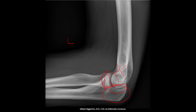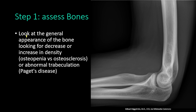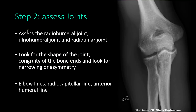After checking those for fractures, you also check the edges of the rest of the bones — the edges of the humerus, radius, and ulna. In assessment of the bones, you also look at the general appearance: osteopenia is a decrease in density, osteosclerosis is an increase in density, and you look for abnormal trabeculation such as in Paget's disease.